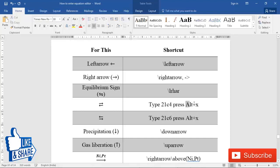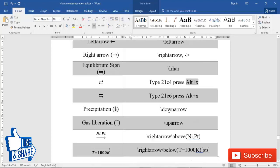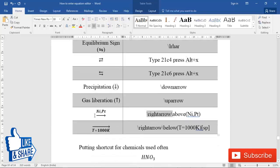For precipitation, down arrow. For gas liberation, up arrow. For writing above arrow, you have to type whatever you want to type above any character or below any character.